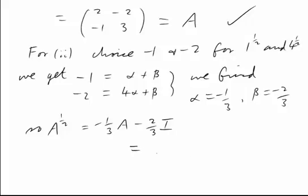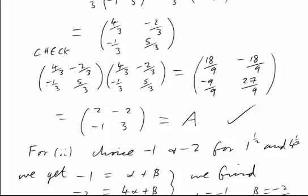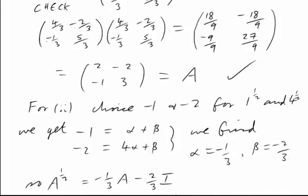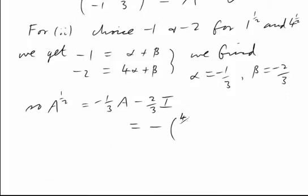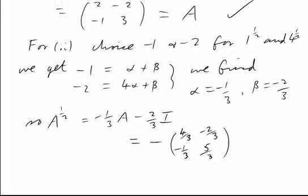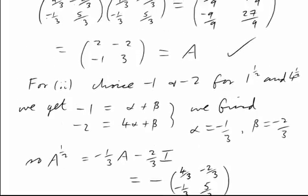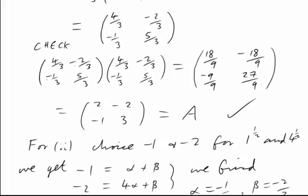And of course that is just the negative of the one we had before. So that will just be minus the matrix that we got before: 4 thirds, negative 2 thirds, negative 1 third, and 5 thirds. That shouldn't come as a surprise. If we have one square root, we can always put a negative on the front of it and get another.